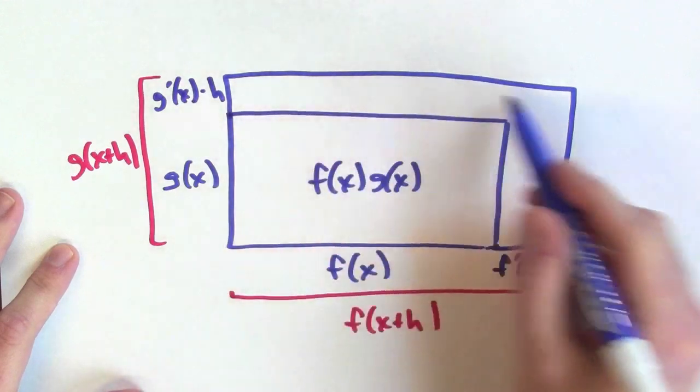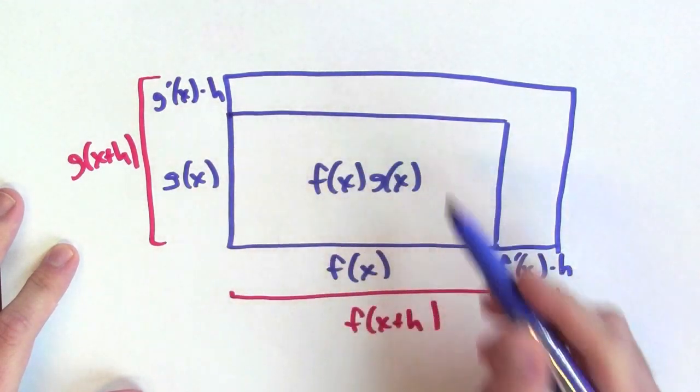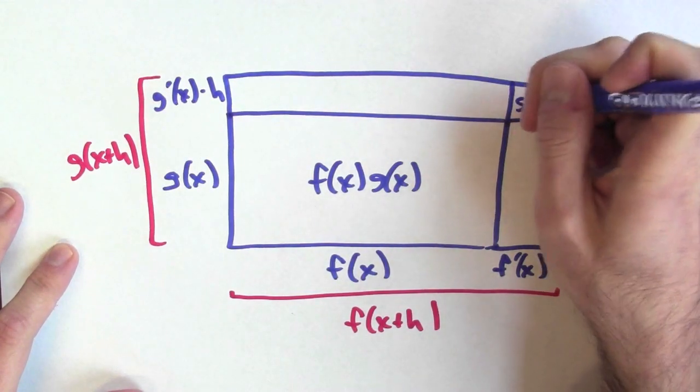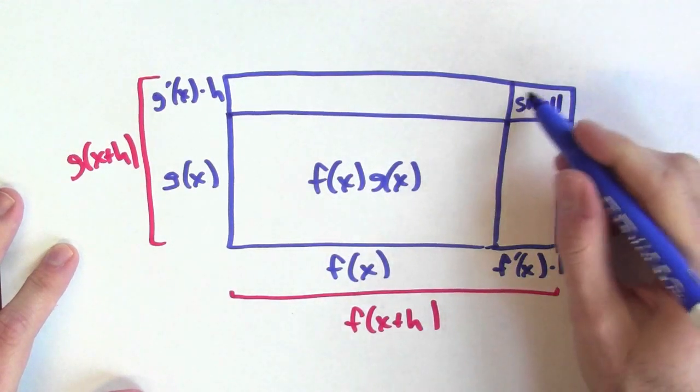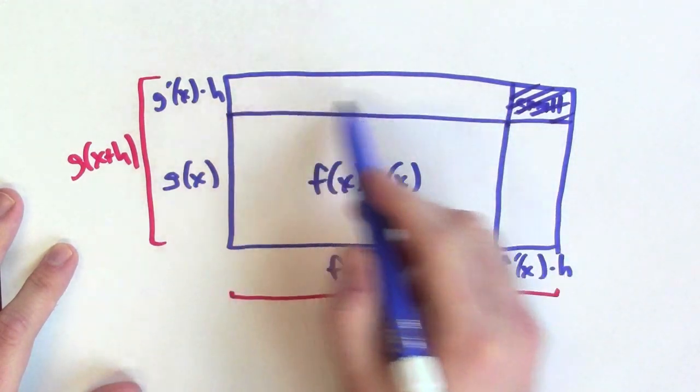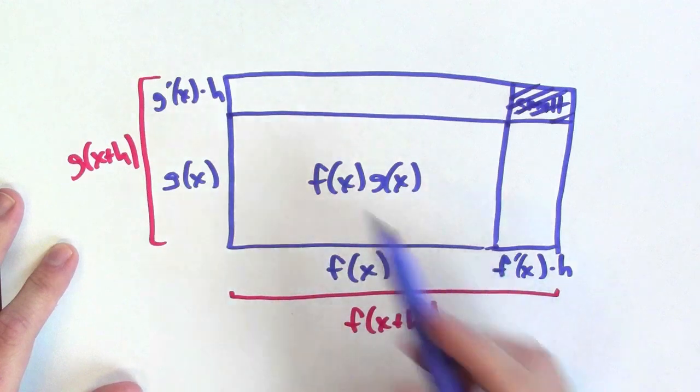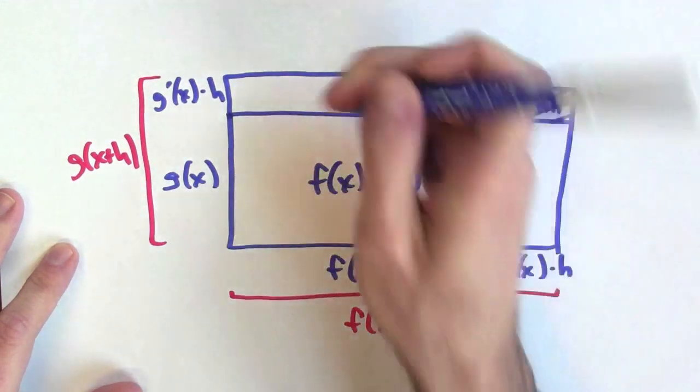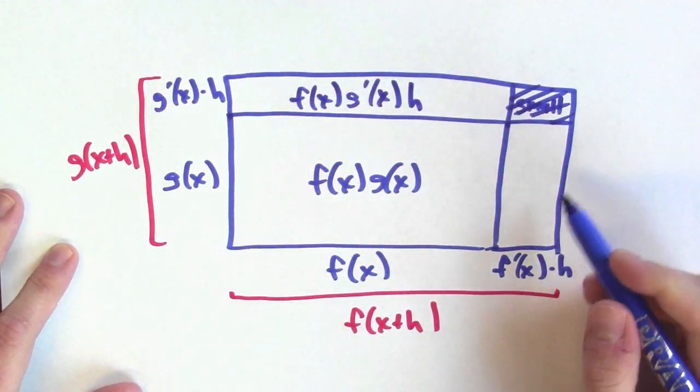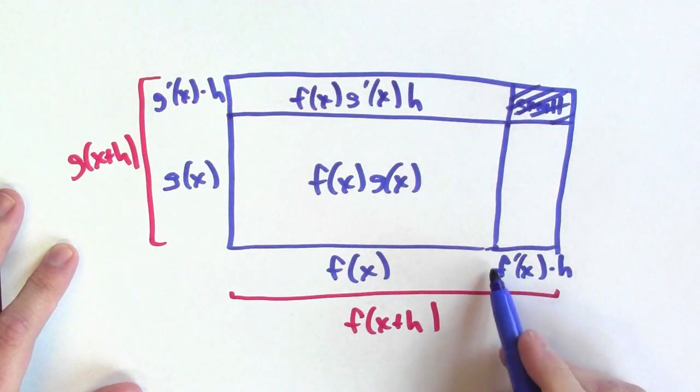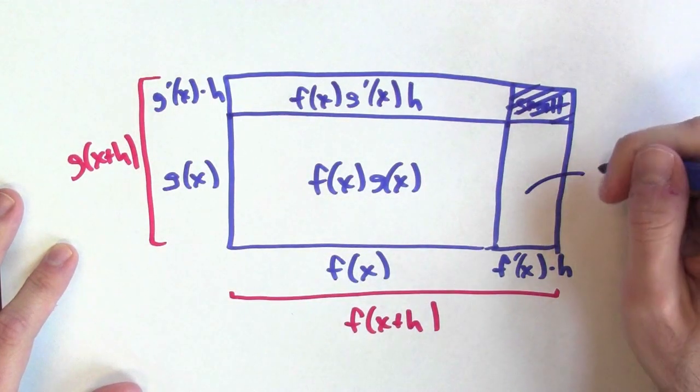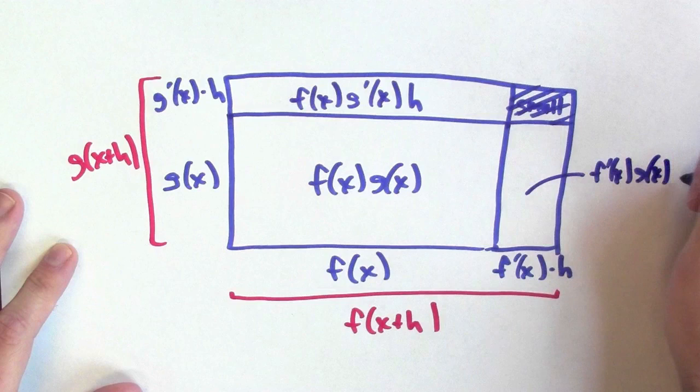Now, I'm trying to compute the area of this L-shaped region to figure out how the product changes when I go from x to x plus h. Let me cut this L-shaped region up into three pieces. This corner piece is pretty small, so I'm going to end up disregarding that corner piece. But let's just look at these two big pieces here. This piece here is a rectangle, and what's its area? Its base is f of x, and its height is g prime of x times h. So, the area of this piece is f of x times g prime of x times h. What's the area of this rectangle over here? Its base is f prime of x times h, and its height is g of x. So, the area of this piece is f prime of x, g of x times h.